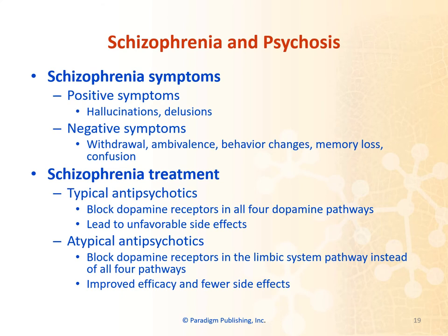Drugs used for schizophrenia and psychosis: symptoms of schizophrenia include positive symptoms such as hallucinations and delusions, and negative symptoms which include withdrawal, ambivalence, behavior changes, memory loss, and confusion. Typical antipsychotics block dopamine receptors in all four dopamine pathways and lead to unfavorable side effects. Atypical antipsychotics block dopamine receptors in the limbic system pathway instead of all four pathways, which leads to improved efficacy and fewer side effects.